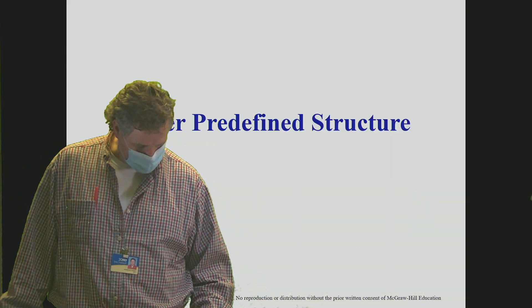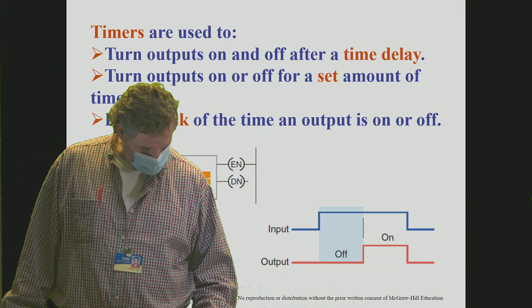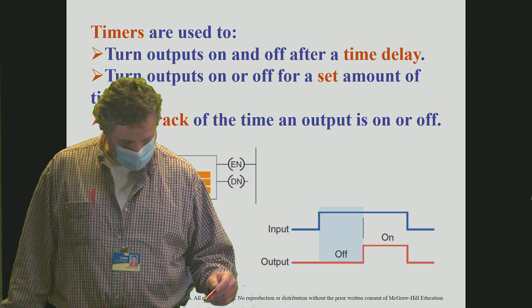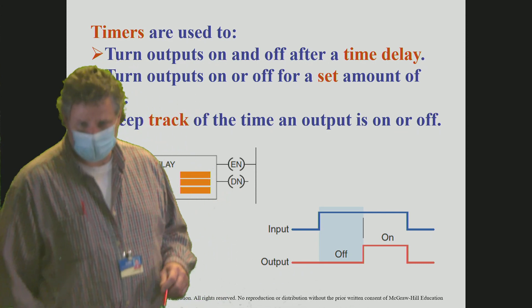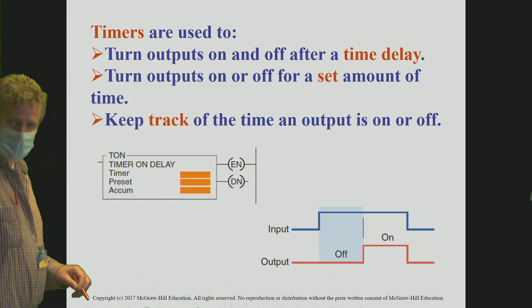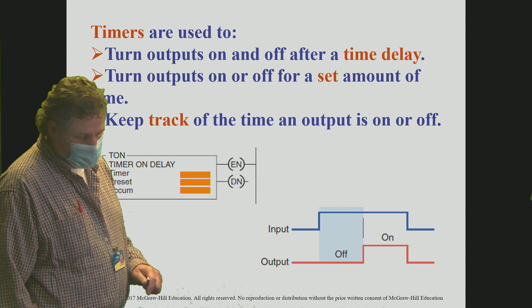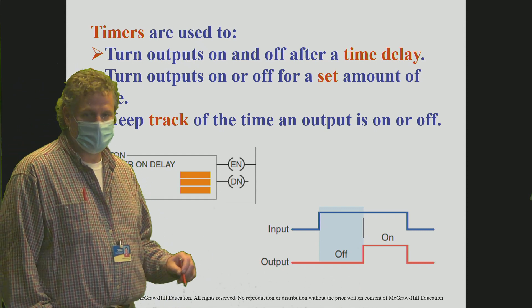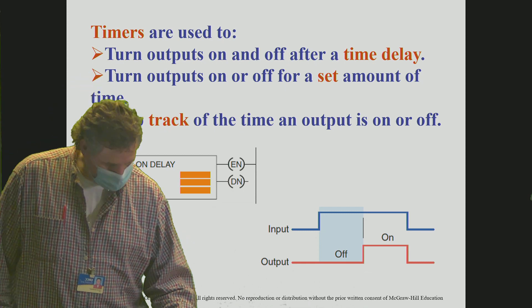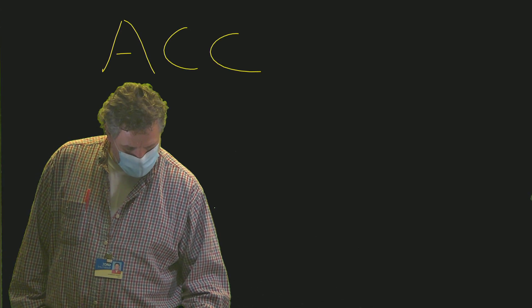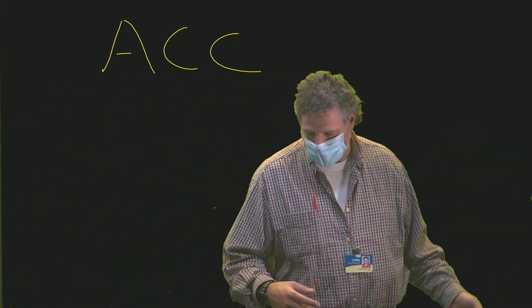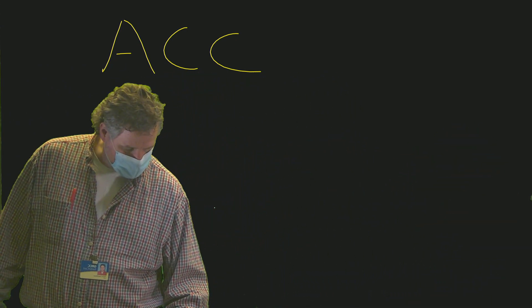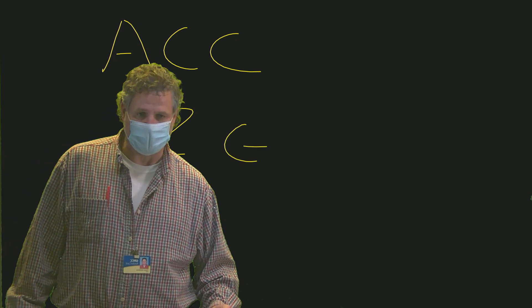Let's look at some of the details of how the timer works. Looking at the basic operations of the timer, keep in mind that the time-on-delay uses three pieces. The accumulated value is the value that is timing — it's a 32-bit word so it's a much larger value. We've got the preset, which is the point at which the output is going to turn on — that done bit will turn on.